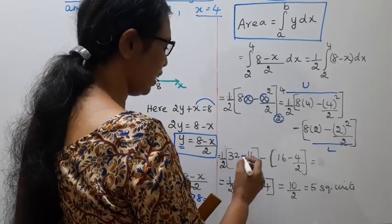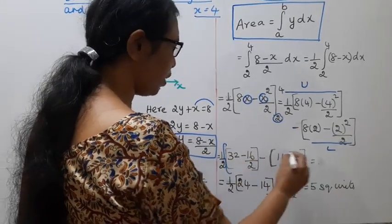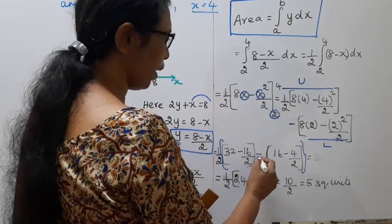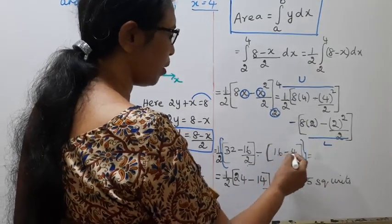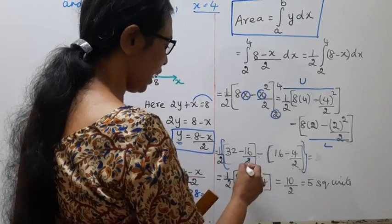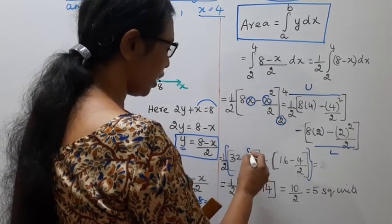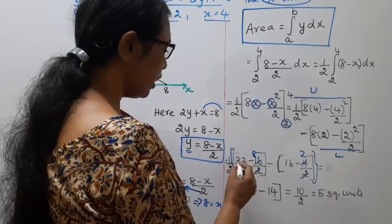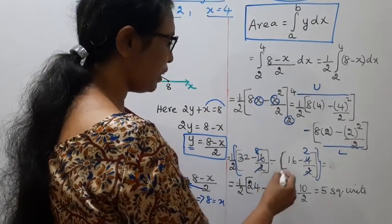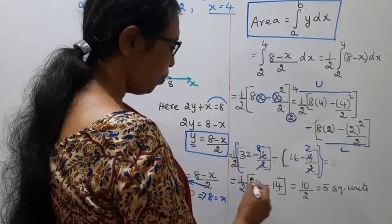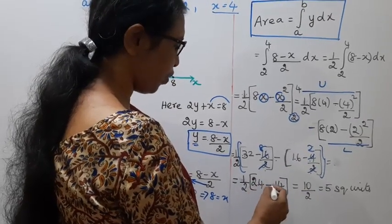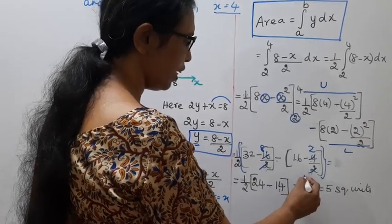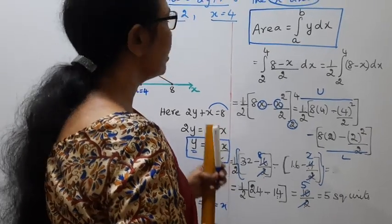1 by 2 times: upper limit gives 8 into 4 minus 4 square by 2, which is 32 minus 8 = 24. Lower limit gives 8 into 2 minus 2 square by 2, which is 16 minus 2 = 14. So area equals 1 by 2 times (24 minus 14) = 1 by 2 times 10 = 5 square units.